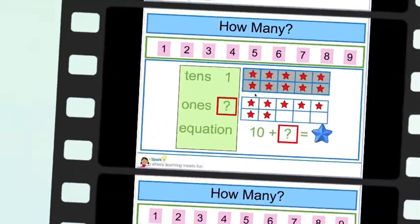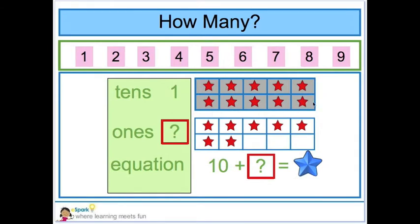See if you can do this one by yourself. Count up from 10 as I point to the stars. How many ones do you have? That's right, 7. And 10 plus 7 equals 17. Great job!